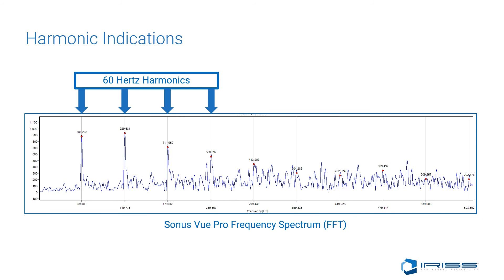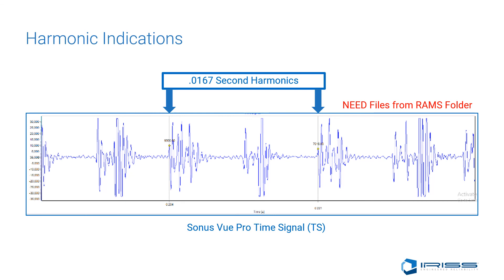Here is an example where the critical angle was achieved: around the 60 Hz mark we have the first harmonic indication, another at 120 Hz, another at 180 Hz, and a fourth around 240 Hz — then it tapers off at 300 Hz. In the first example, the inspector confirmed the correct diagnosis by identifying a 0.0167 seconds harmonic in the time signal and 60 Hz in the FFT. With clear indications in both views, the inspector can confirm achievement of the critical angle and determine the existence of treeing or tracking.